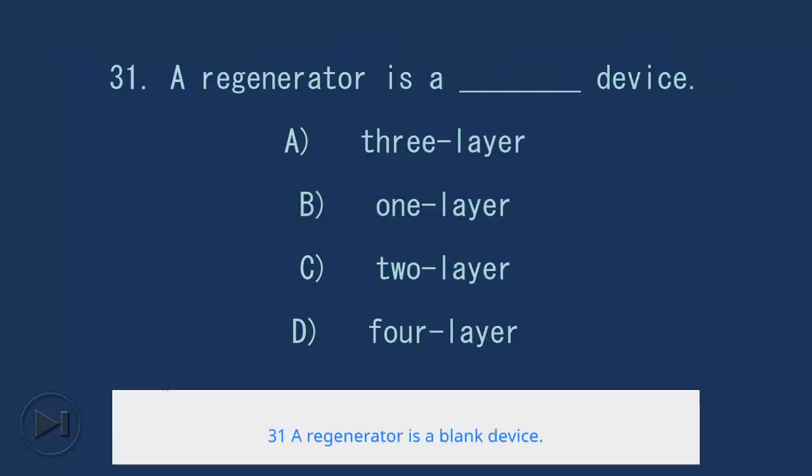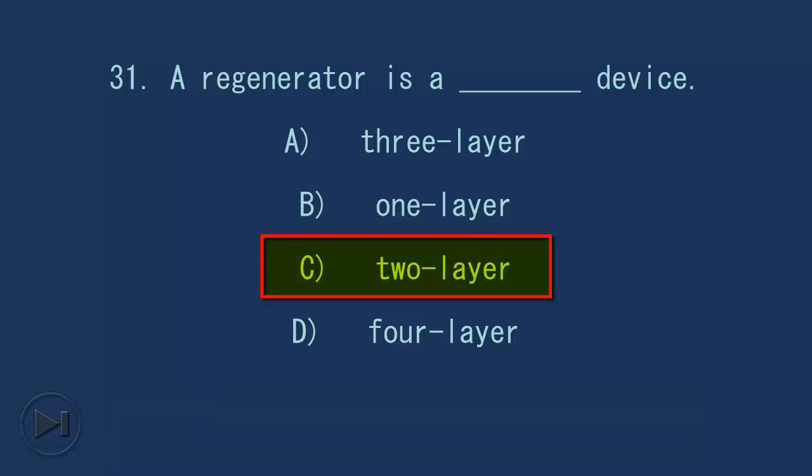31. A regenerator is a blank device. A. Three layer, B. One layer, C. Two layer, D. Four layer. Answer: C. Two layer.